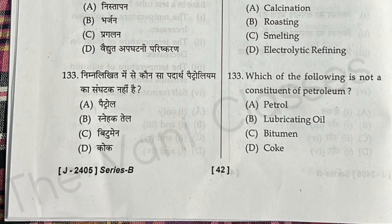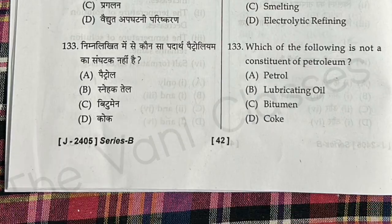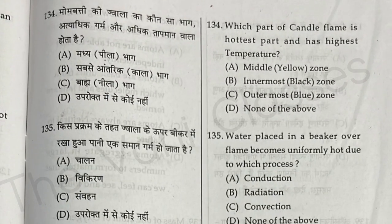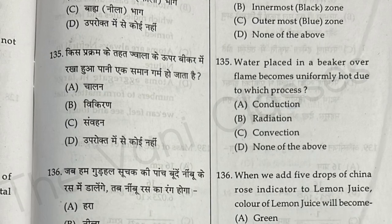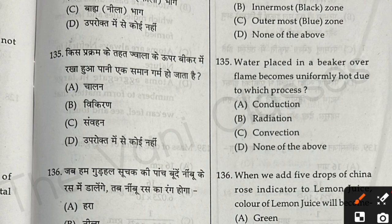Question 133: Which of the following is not a constituent of petroleum? The answer is coke, option D. Question 134: Which part of the candle flame is the hottest and has the highest temperature? It is the outermost blue zone — option C. Question 135: Water placed in a beaker over a flame becomes uniformly hot due to which process? It is due to convection — option C.